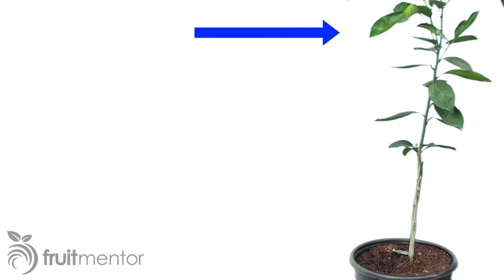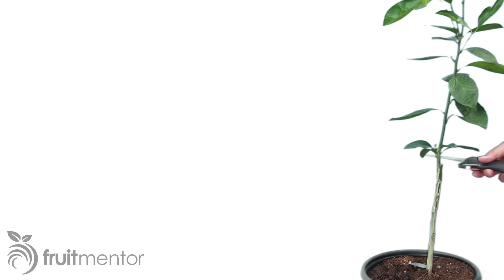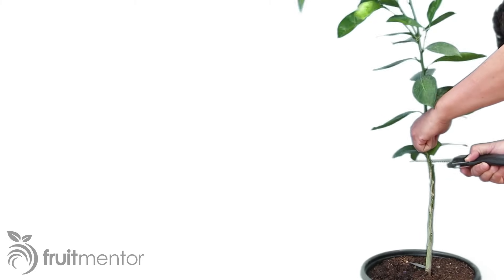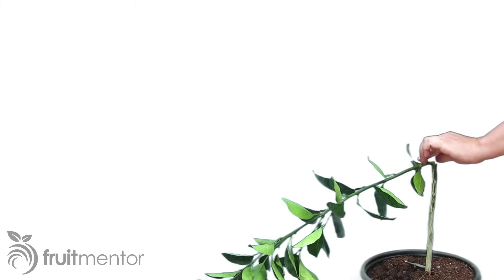According to apical dominance, natural hormones from buds higher in the tree will discourage the growth of the grafted buds. To force the grafted buds to grow, I make a cut halfway through the rootstock and push the top over so that it is lower than the grafted buds.